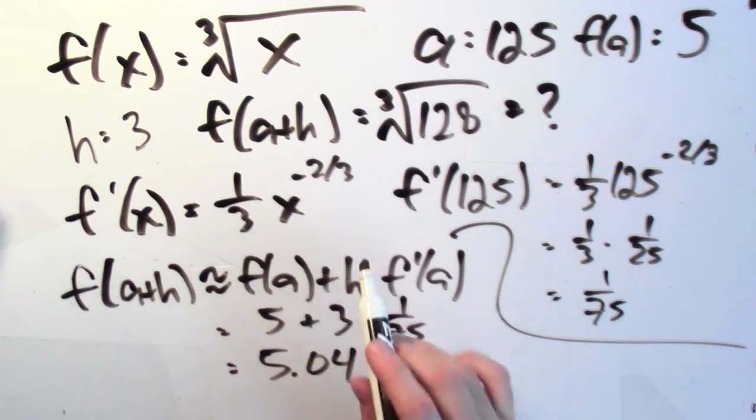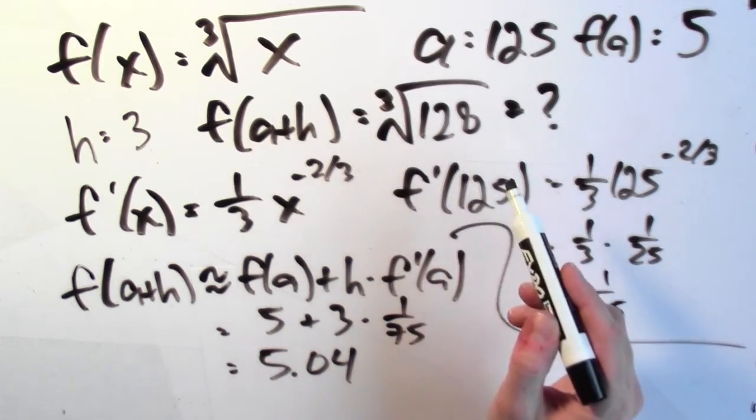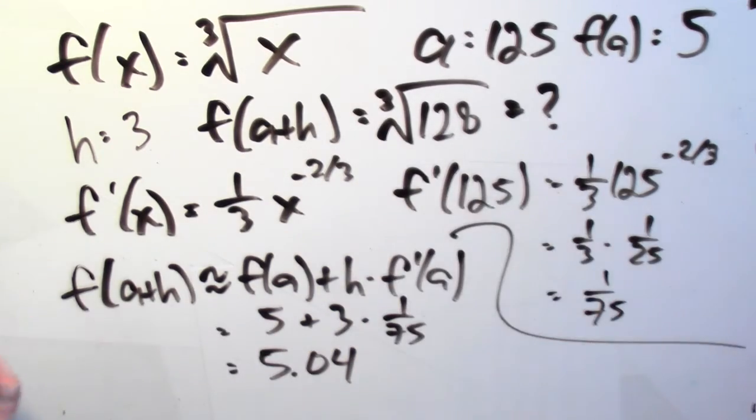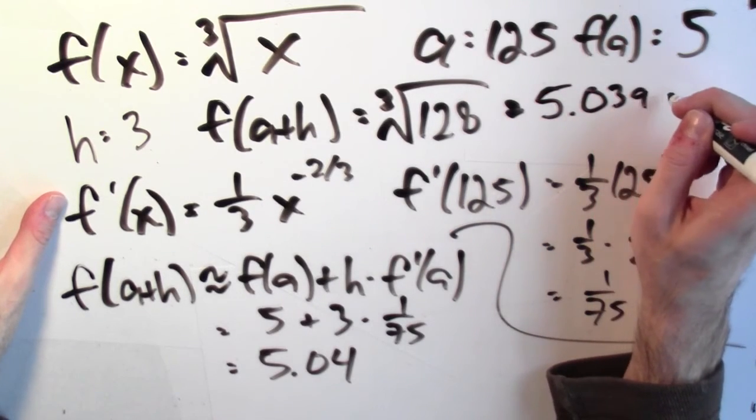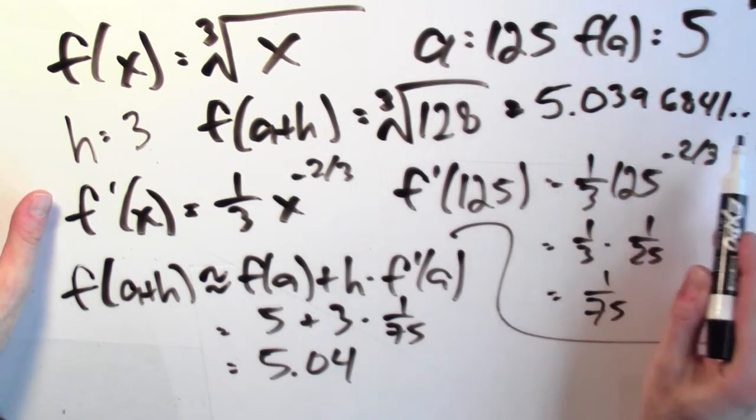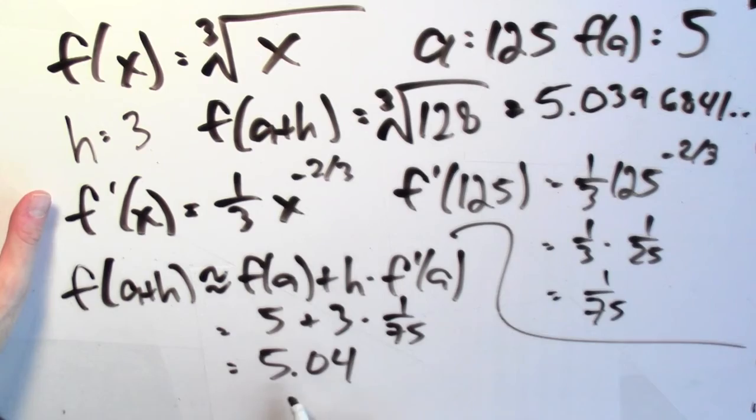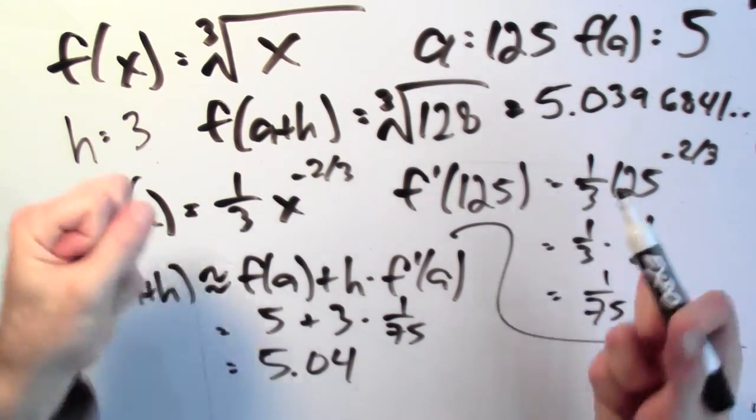Now, how close is that to the actual retail value of the cube root of 128? Well, it turns out that the cube root of 128 is actually about 5.0396841 and it keeps on going. Which is awfully close to 5.04. So our linear approximation game is working really quite well.